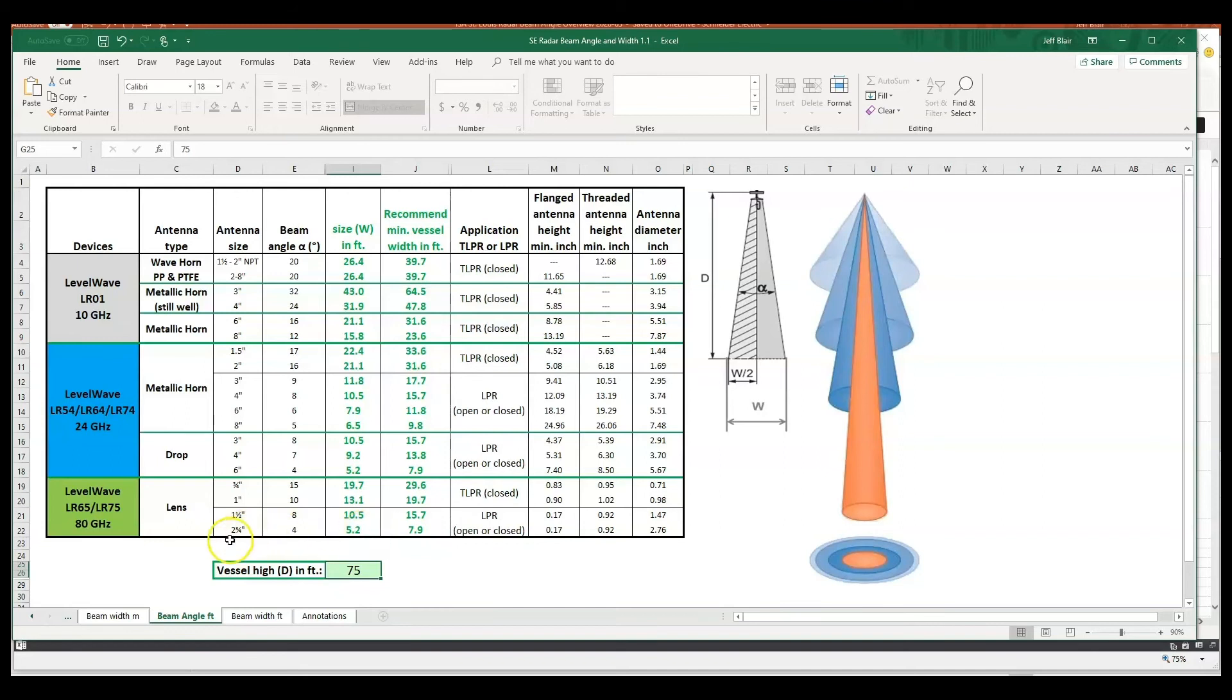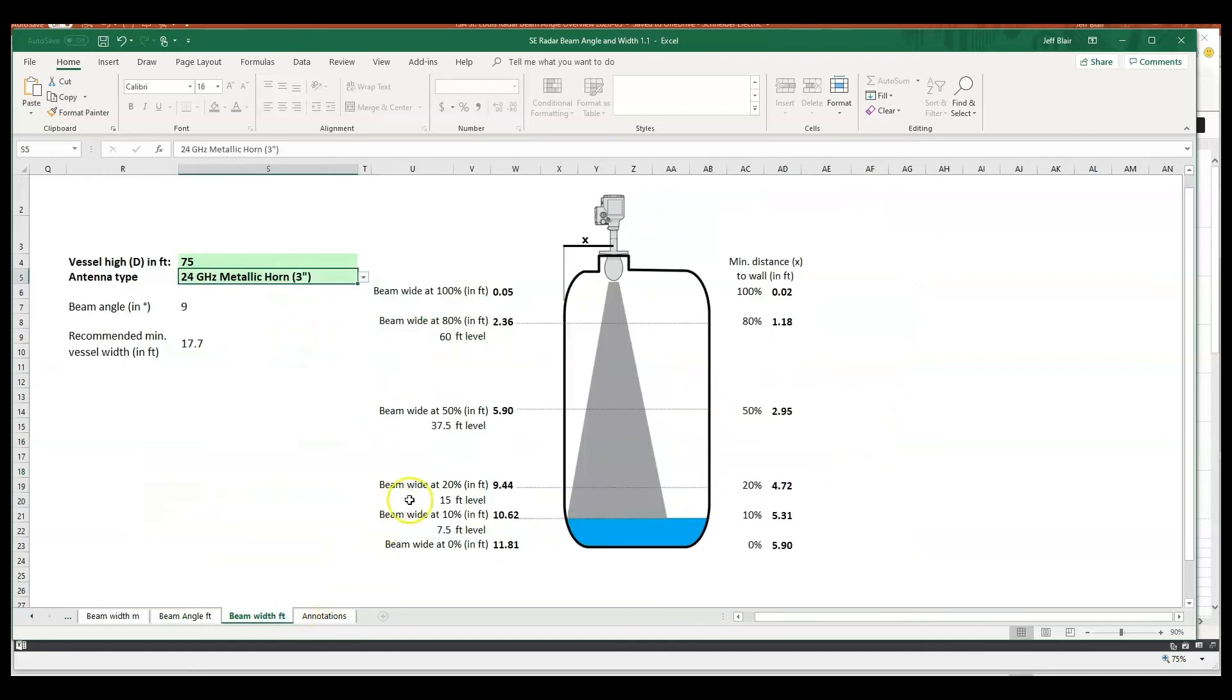So back to - if you remember the nozzle and the valve we looked at - we could actually figure out if we plugged in 75 feet and we wanted to go with the most narrow beam we could find, that would be an 80 gigahertz with the 2 and 3/4 inch lens. We've got our 4-degree beam angle.